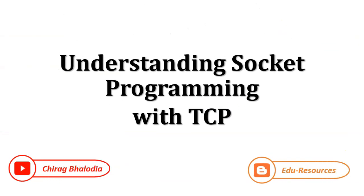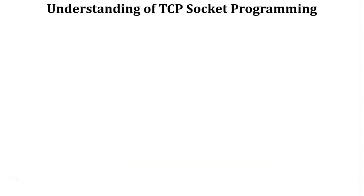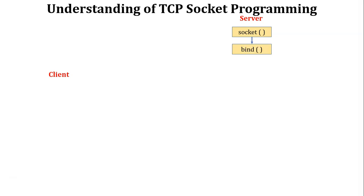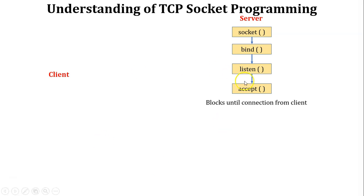Next, understanding socket programming with TCP. In this topic I explain the flow of the program. TCP socket programming is used in client-server architecture, where the server and client programs are separate. At the server side, the server first creates a socket, then binds the IP address and port number with a specific service using the bind function. Then the listen function listens for incoming connections from clients — the server can handle multiple clients at a time. The accept function is blocked until a connection arrives from a client.